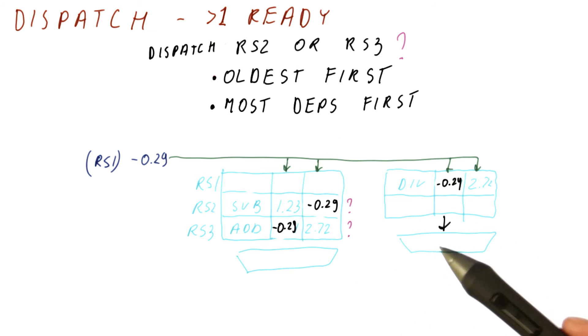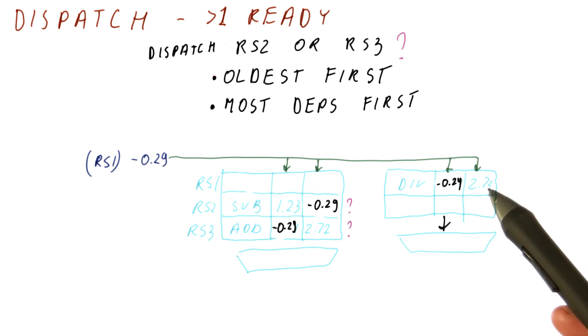But this heuristic would be difficult to implement because we would have to actually search a lot of stuff, which is going to be very power hungry and so on. So typically, if we do anything, we will just do the oldest first.